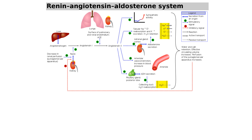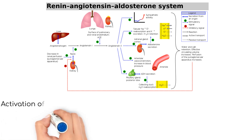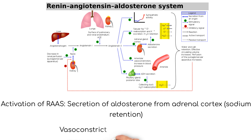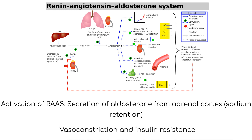The renin-angiotensin-aldosterone system, or RAAS, can also contribute to hypertension. Renin is a hormone secreted by the kidney. Activation of the RAAS results in the secretion of aldosterone from the adrenal gland, which promotes sodium retention, systemic vasoconstriction, and insulin resistance.